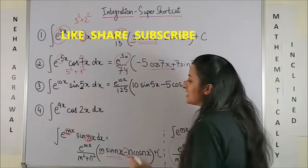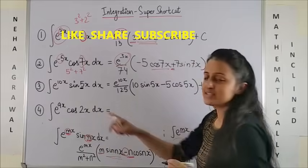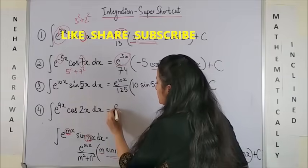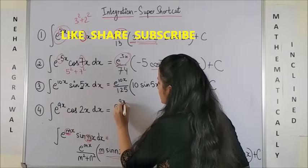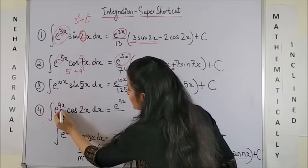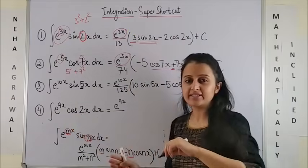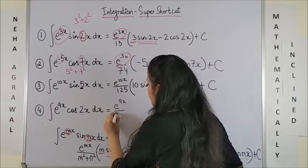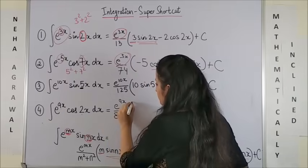Similarly, for the last one, the moment you see this form, just copy down e to the power 9x upon, this will be 9 square plus 2 square. So 81 plus 4, that's 85 into,